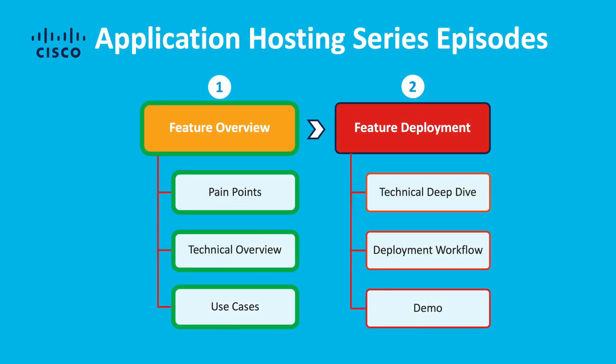With that being said, this concludes Episode 1 of the Internet of Things powered by Cisco's application hosting on the Catalyst Access Point series. If you've enjoyed this video, please give us a thumbs up and subscribe to our YouTube channel for the latest news on Cisco's wireless technology. In the next episode, I will be deep diving into the technical aspects of this feature along with the different steps of how we can leverage Cisco DNA Center to easily deploy IoT applications onto our wireless infrastructure. Please click on the link in the description below to view it. And as always, thank you for watching!